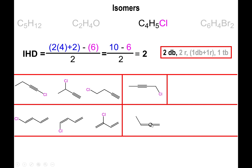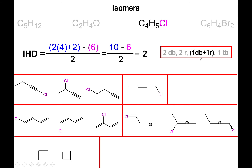You could also draw the two double bonds directly connected to the same carbon — a cumulated diene. Drawing the carbon as a dot makes this clear. You still have four carbons total, and you can place the chlorine on the far left end, on the second carbon, or on the final carbon on the right. The third carbon already has four bonds so it cannot be changed.